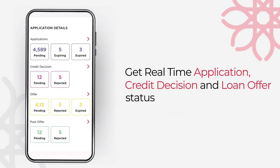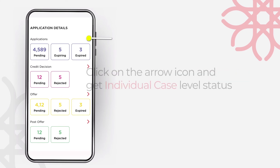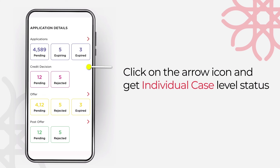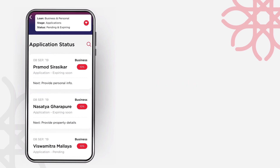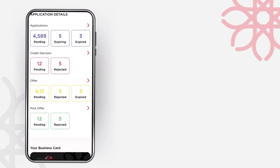Track pending, rejected or expired applications, credit decisions and offers. Click on the arrow icon and get case level status of all applications, credit decisions and offers instantly and easily.